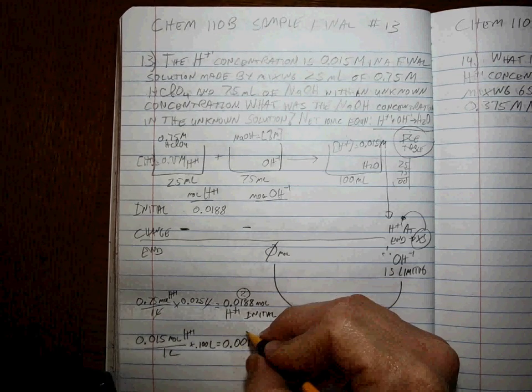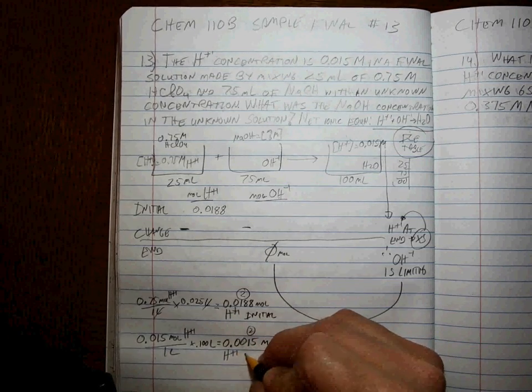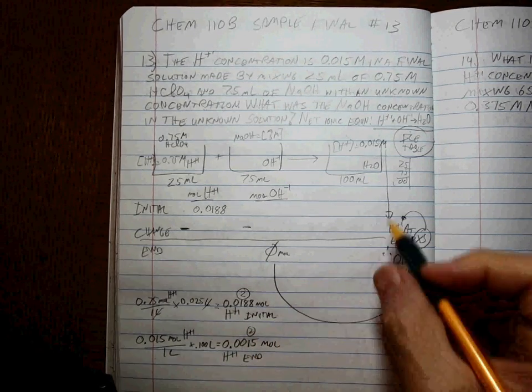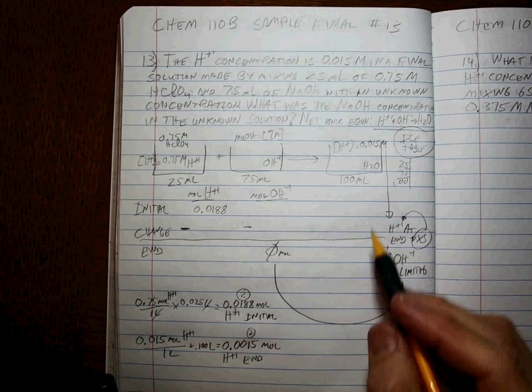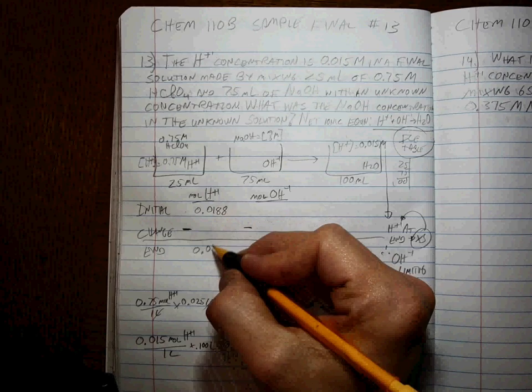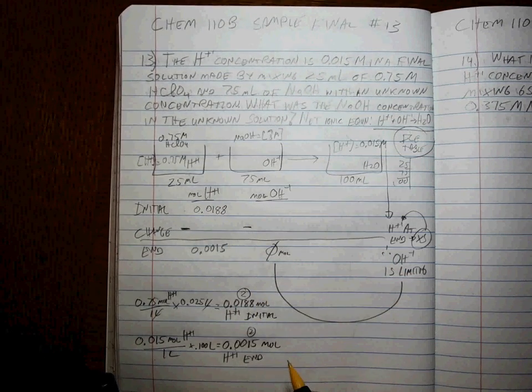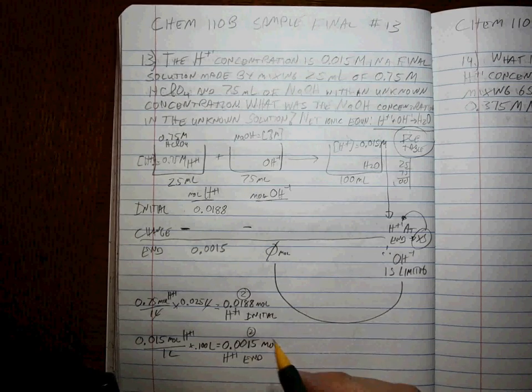This is two sig figs of H+ at the end. So 0.0015 moles at the end. We have everything lined up.